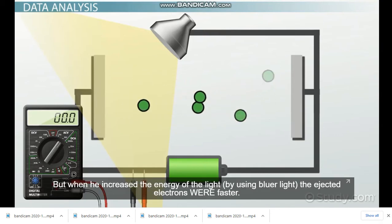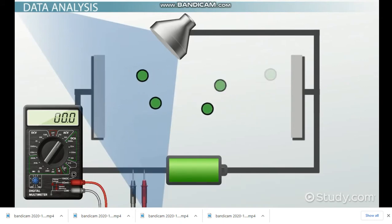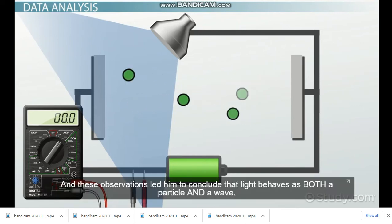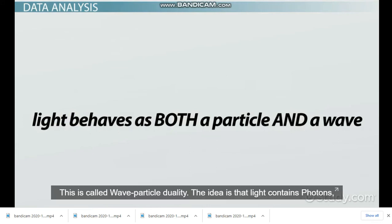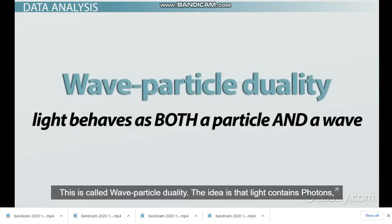But when he increased the energy of the light by using bluer light, the ejected electrons were faster. This was a big surprise to him, and these observations ultimately led him to conclude that light behaves as both a particle and a wave. This is called wave-particle duality.